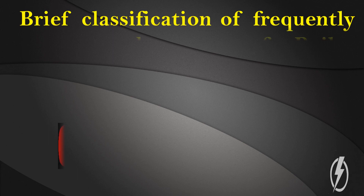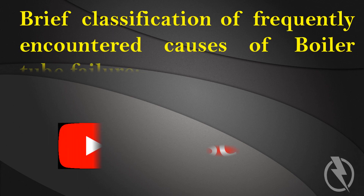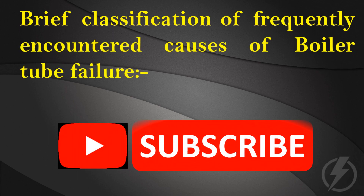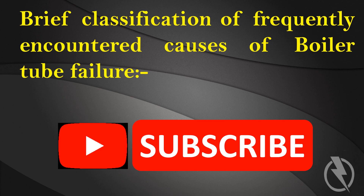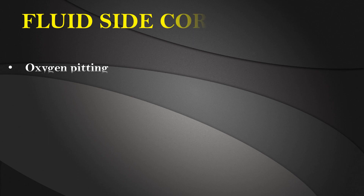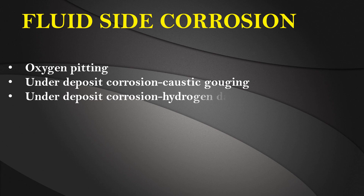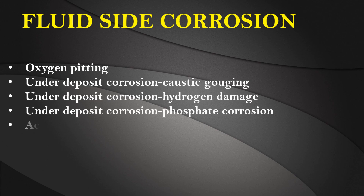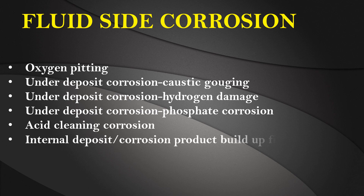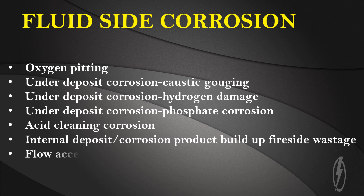Brief classification of frequently encountered causes of boiler tube failure. Fluid side corrosion: oxygen pitting, under deposit corrosion caustic gouging, under deposit corrosion hydrogen damage, under deposit corrosion phosphate corrosion, acid cleaning corrosion, and internal deposit or corrosion product buildup.